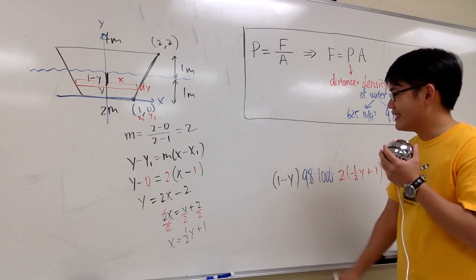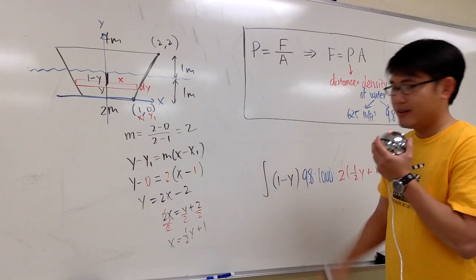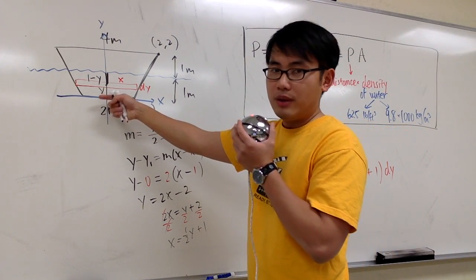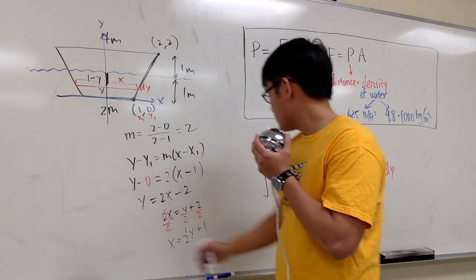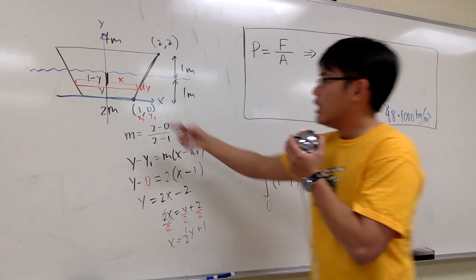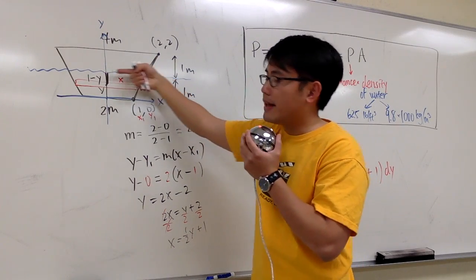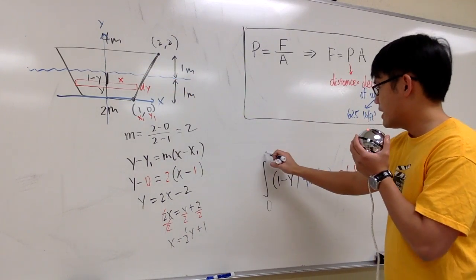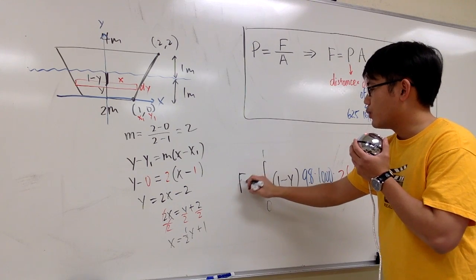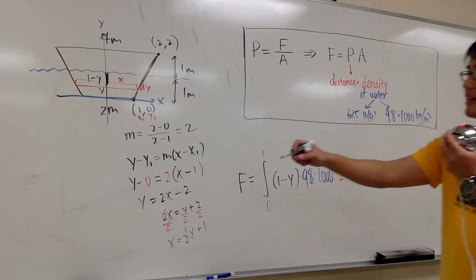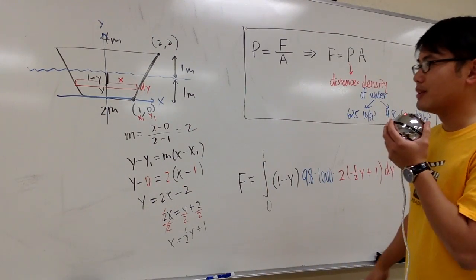And we are almost done, because now I just have to integrate from where to where. 0, this is the very first rectangle from 0 up to the very last, which is around the surface, which is when y is equal to 1. And we are done. This right here will give you the force, the hydrostatic force that's acting on this portion of the trapezoid.